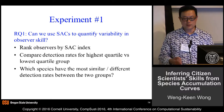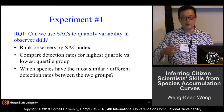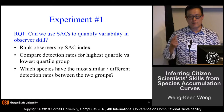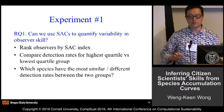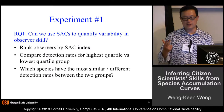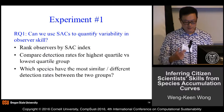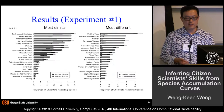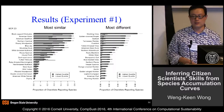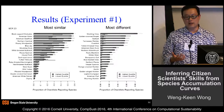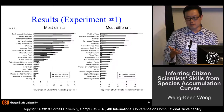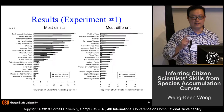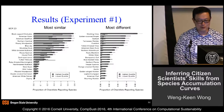The first question: can we use this species accumulation curve index to quantify variability in observer skill? We took all eBird participants, ranked them by this index, and looked at detection rates for various species between the highest and lowest quartile groups. As expected, for species easily detected by novices and experts alike, you see something like the left-hand side graphs. For species that are very difficult to detect — requiring specialized knowledge or easier by sound than sight — you see what's shown on the right-hand side.